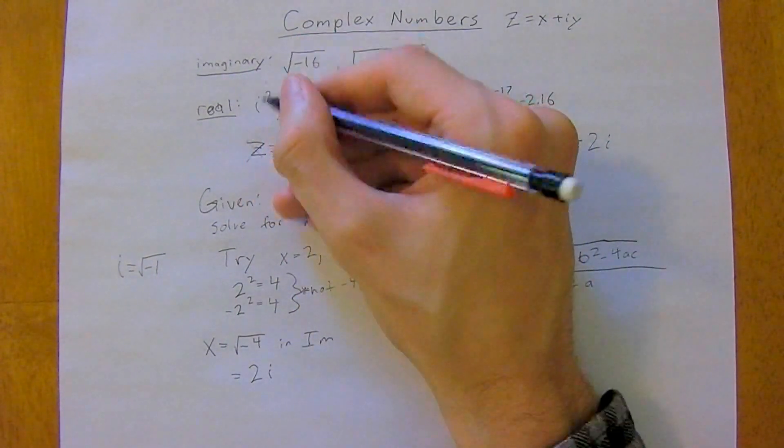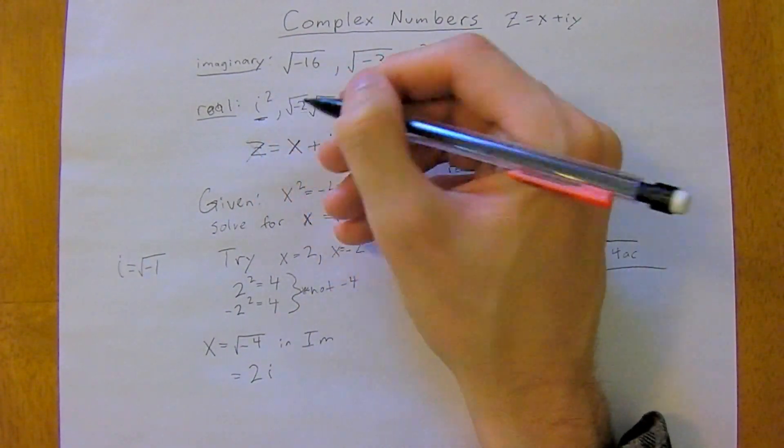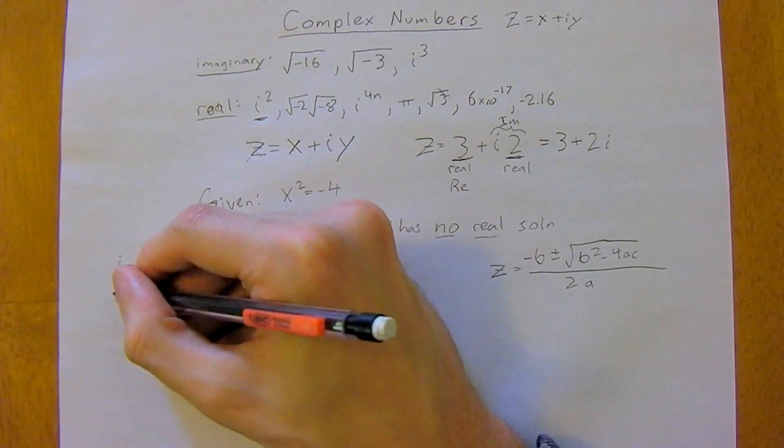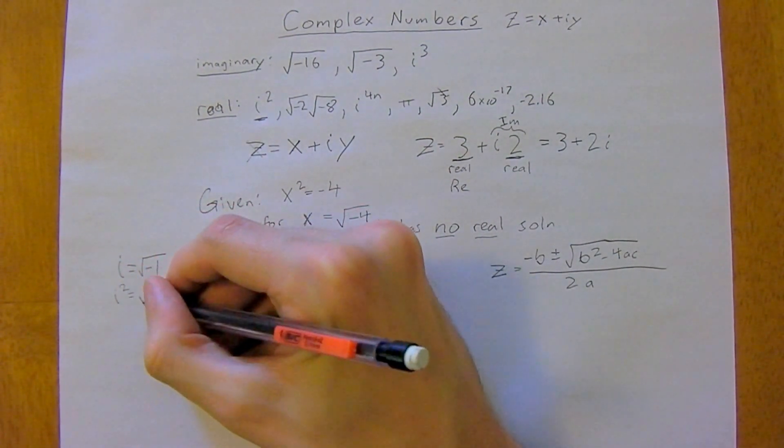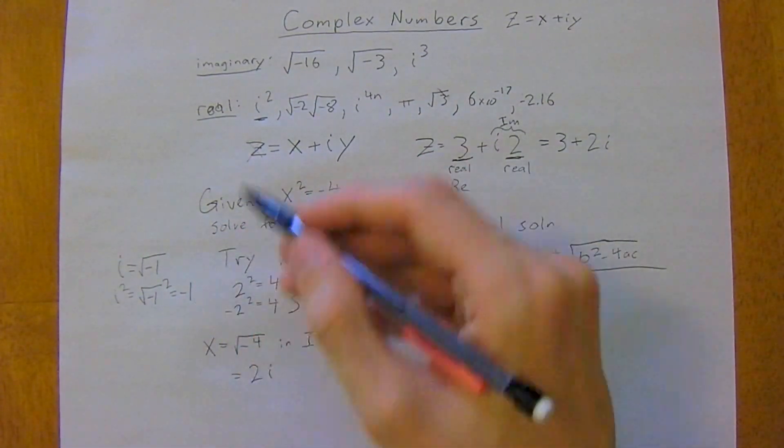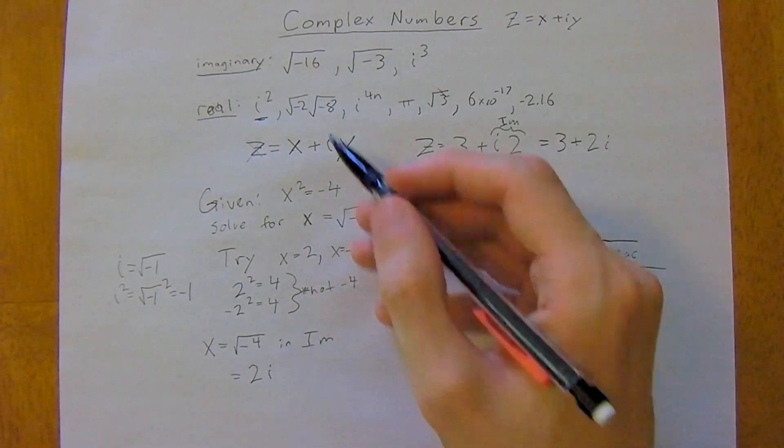So going back to up here, why is i squared a real number? Well, if we take i squared, that's just the square root of negative 1 squared, which is negative 1, and negative 1 is a real number.